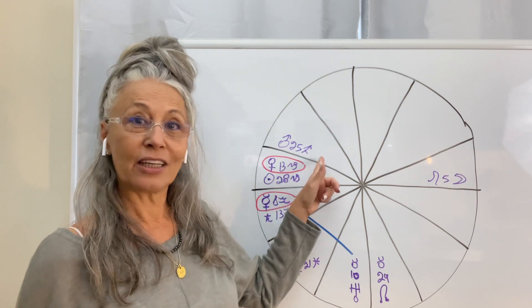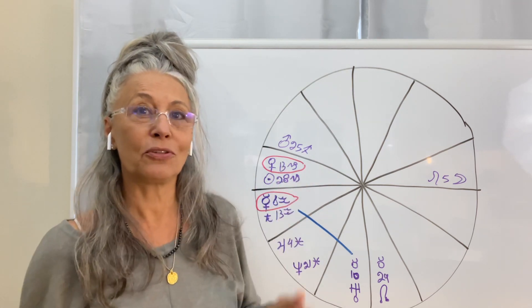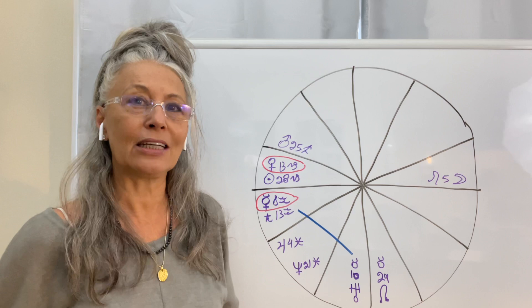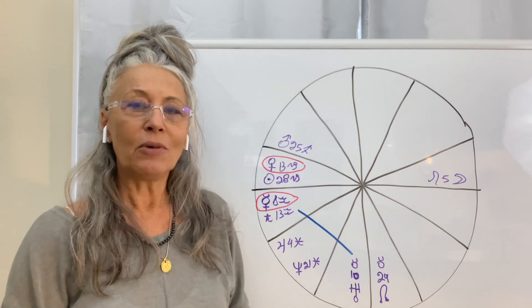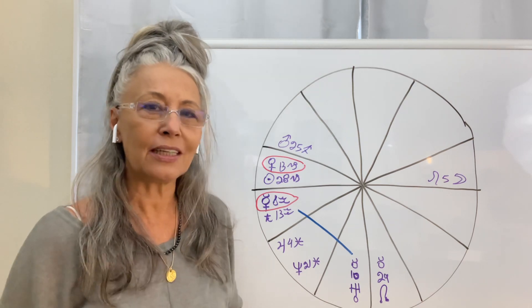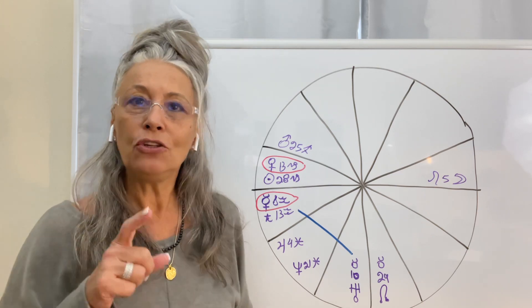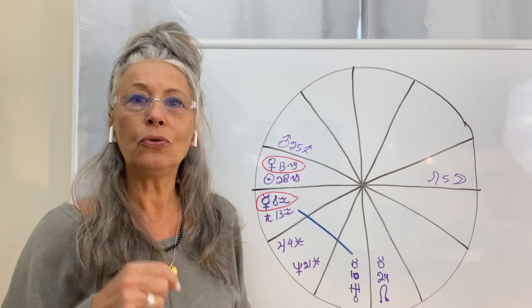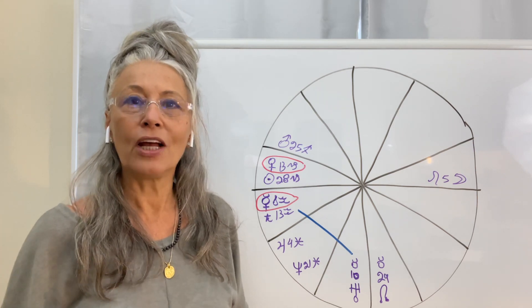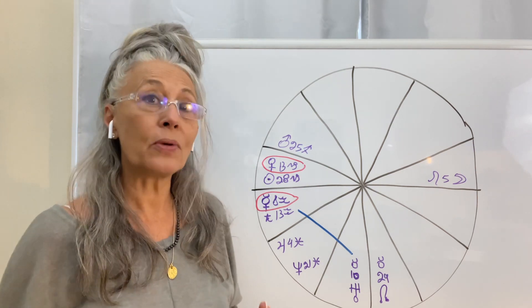So we have Mars in Sagittarius. Mars has been in Sagittarius for almost a month, almost ending the transit in Sagittarius. And Mars in Sagittarius is that positive, moving forward, action-taking energy that's saying, use what you know, what you have learned through your life to take action and create something.